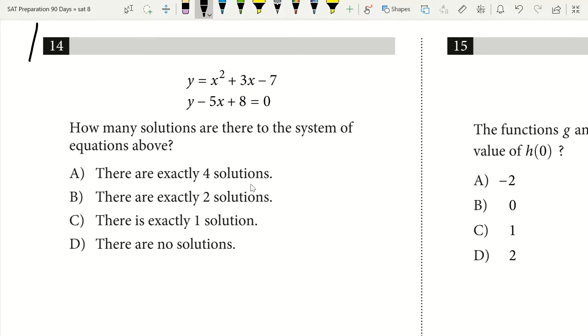So if you look at question 14, I'm going to use question 14 to illustrate this tip and trick. We have two different equations: y equals x squared plus 3x minus 7, and y minus 5x plus 8 equals 0. So we ask how many solutions there are to the system of equations above.